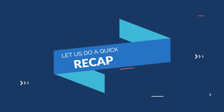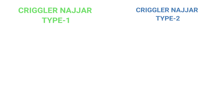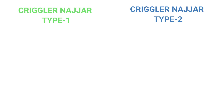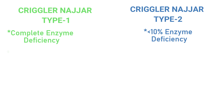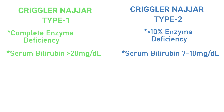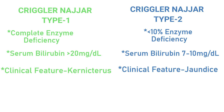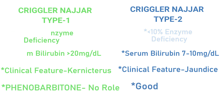Let's do a quick recap. Crigler-Najjar type 1 is due to complete enzyme deficiency, while type 2 is due to less than 10% enzyme. Serum bilirubin is greater than 20 mg/dL in type 1, while in Crigler-Najjar type 2, serum bilirubin is 7–10 mg/dL. Kernicterus is a clinical feature present in type 1, and jaundice is present in type 2. There is no role for phenobarbital in type 1, while there is a good response in type 2.